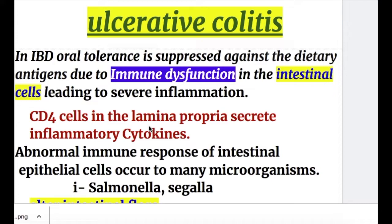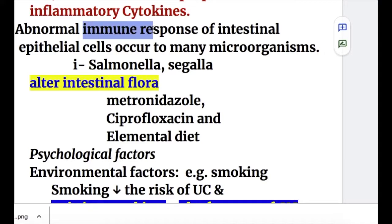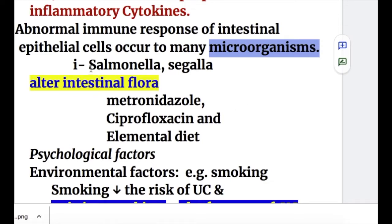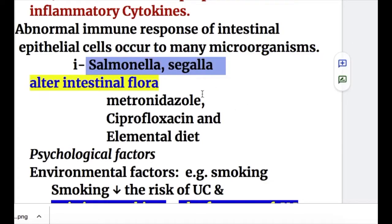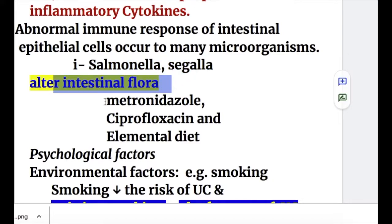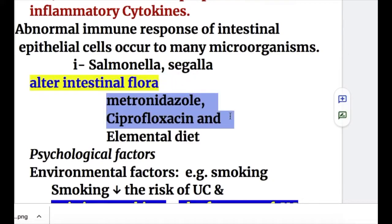I have discussed pathogenesis of ulcerative colitis in another video, but briefly: oral tolerance is suppressed against dietary antigens due to immune dysfunction in the intestinal cells, leading to severe inflammation in ulcerative colitis and Crohn's disease. The CD4 cells in the lamina propria of the intestine secrete inflammatory cytokines. The abnormal immune response of intestinal epithelial cells occurs due to many microorganisms like Salmonella, Shigella, and other bacteria, and substances that alter the intestinal flora such as metronidazole and ciprofloxacin may also be responsible.